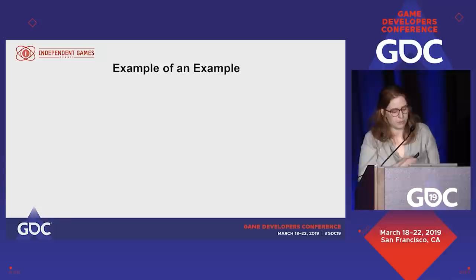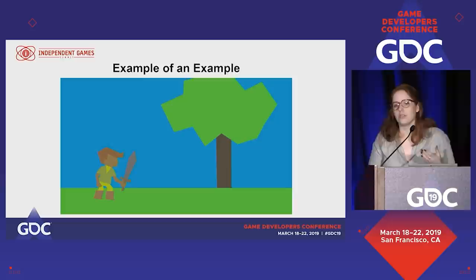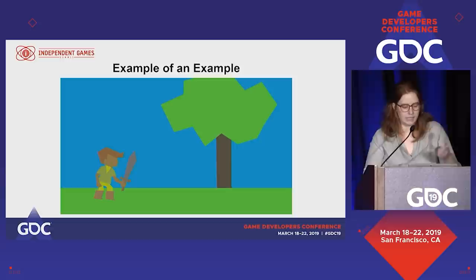You're looking at your game and you're noticing that your character isn't as visible as you would like it to be against the background. What tools do you have at your disposal to make your character more visible? What is your player looking at instead of your character? Things to think about. Well, let's start with critique.